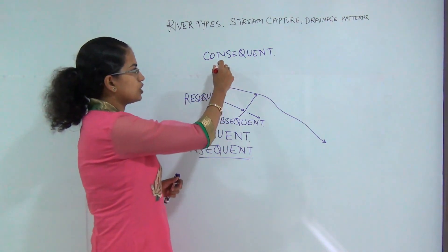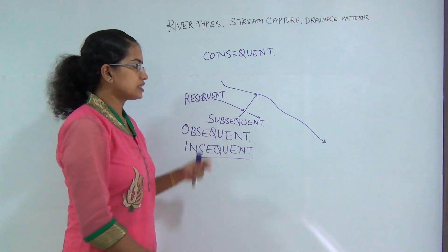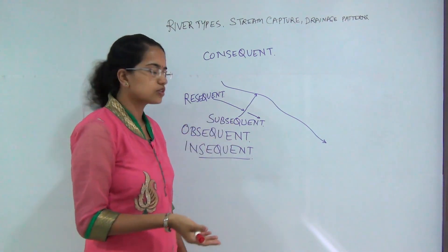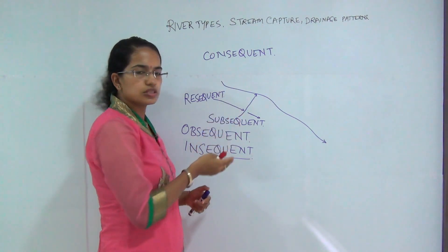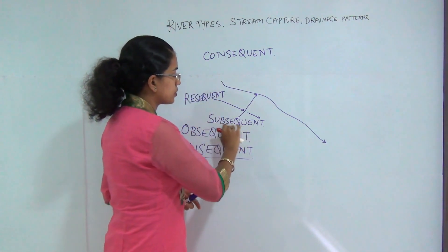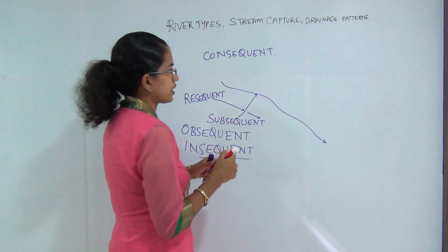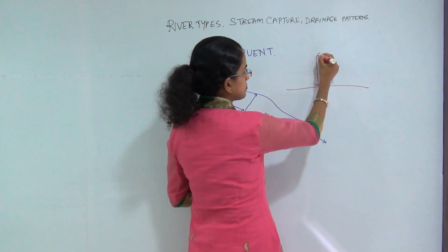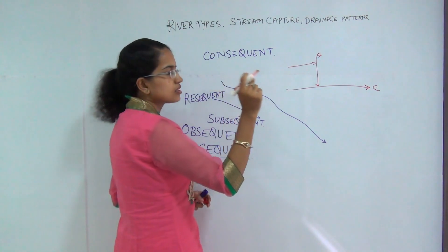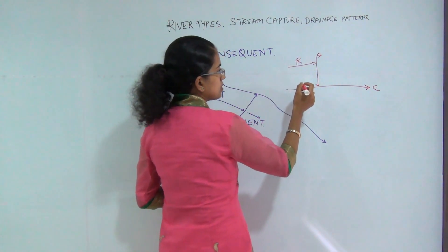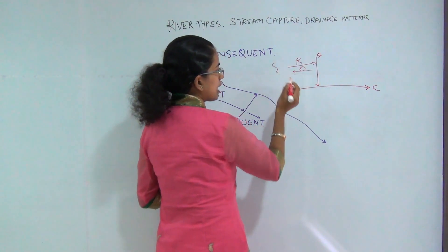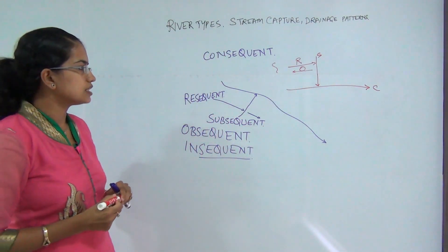A brief recap: consequent streams run toward the direction of the slope. Subsequent streams result from later headward erosion and join the main consequent stream at the weaker sections, usually at a perpendicular axis of 90 degrees. Resequent streams are those joining parallel to the consequent stream. Obsequent streams run in the opposite direction. And those streams with no well-defined pattern are the insequent streams.